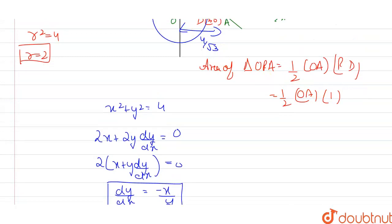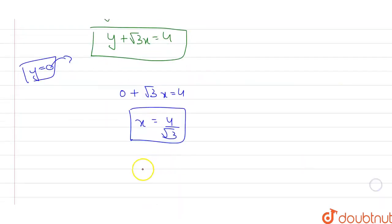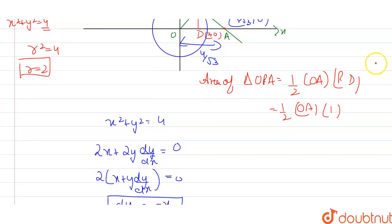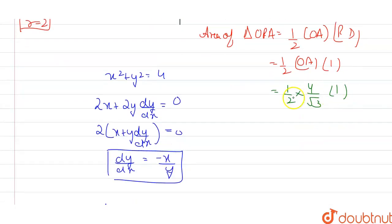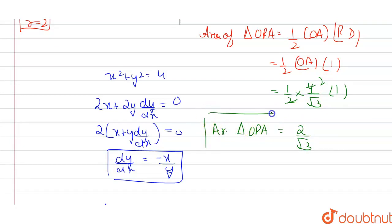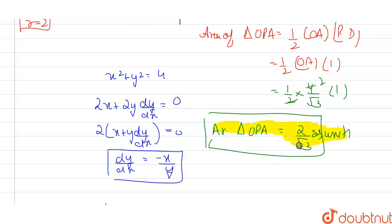Now I can find the area of triangle OPA: area = ½ × OA × PD = ½ × (4/√3) × 1 = 2/√3 square units. The 2 from the denominator cancels with the 4 in the numerator. So the area of triangle OPA is 2/√3 square units.